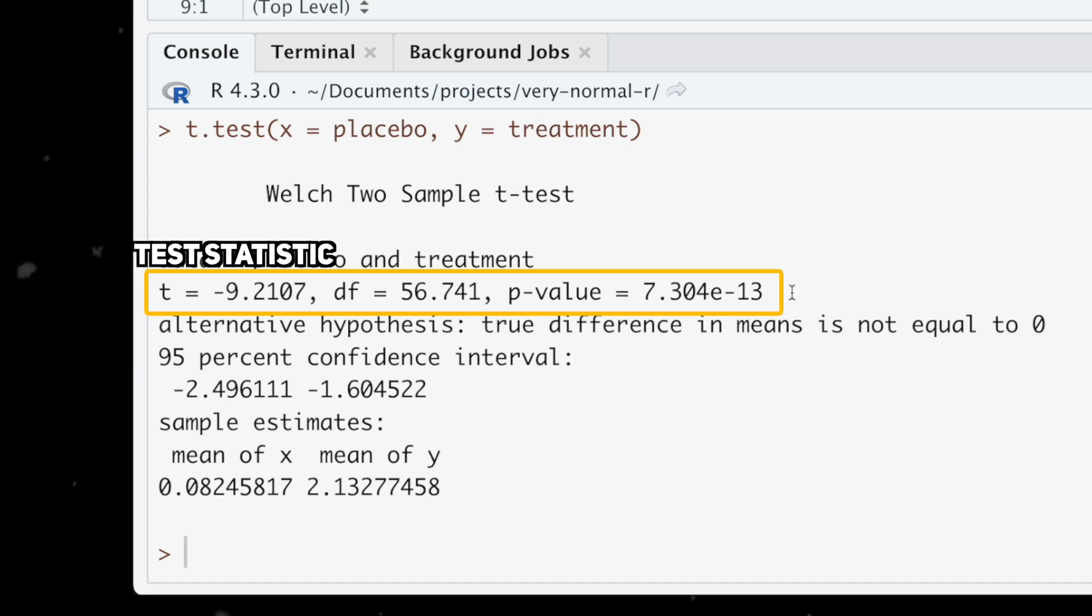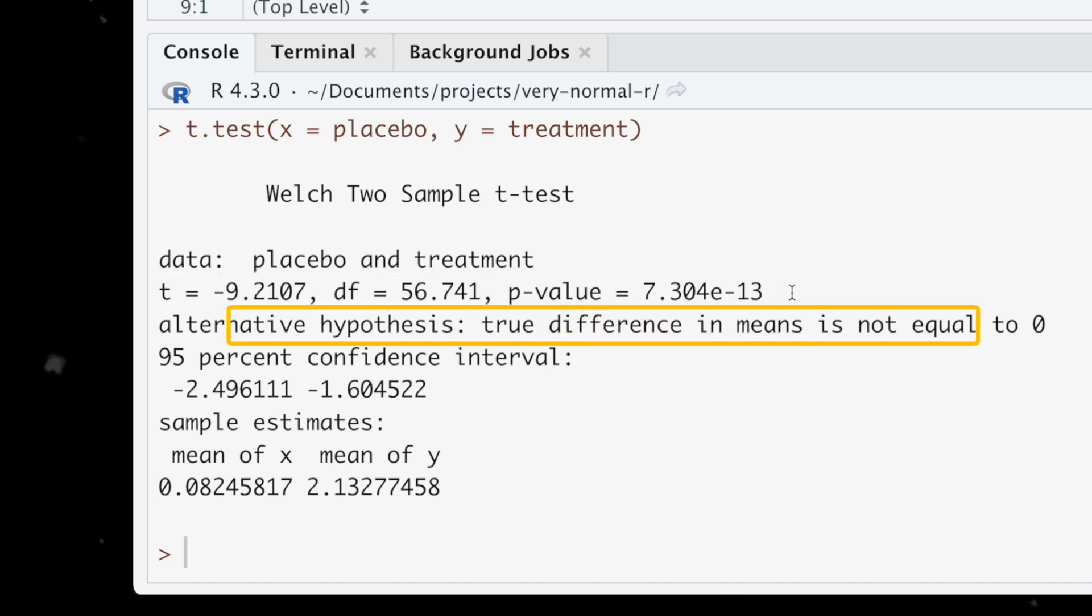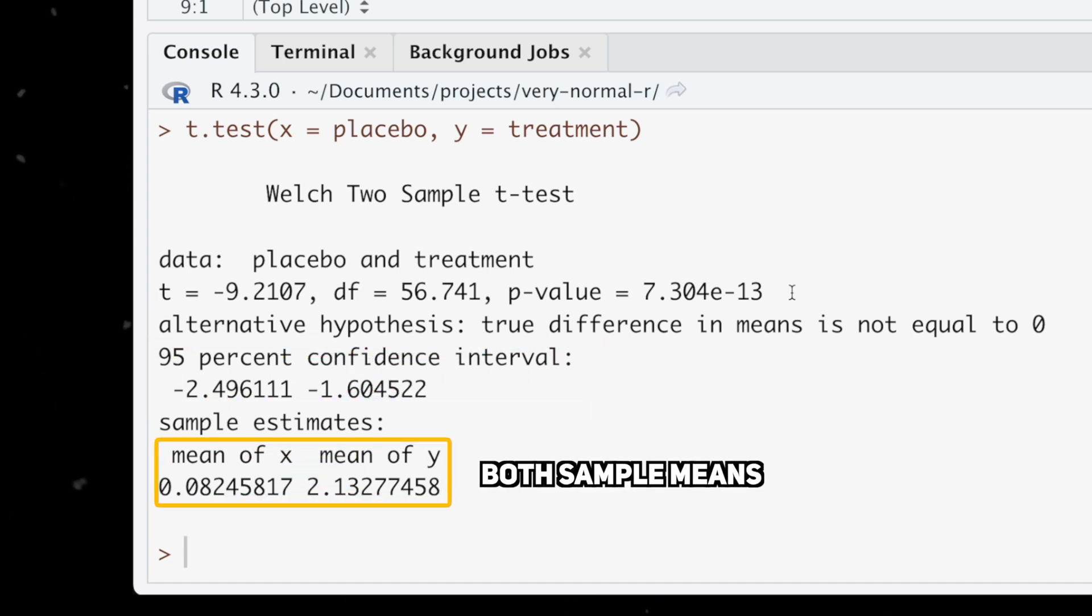In this line, we can see the test statistic, the degrees of freedom, and the p-value that comes for the test statistic. It reminds us that we're doing a two-sided test based on the true difference being not equal to zero, and gives us a confidence interval. Finally, it gives us the estimated sample means for both groups.